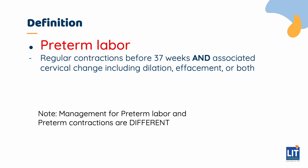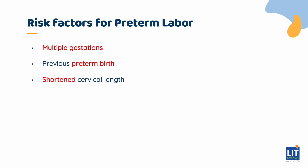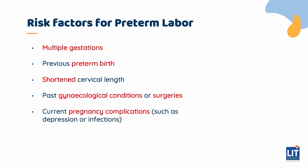There are several risk factors for preterm labour. These include multiple gestations such as twins, history of previous preterm birth, a short cervical length during pregnancy, past gynaecological conditions or surgeries such as unicornuate uterus, and current pregnancy complications such as depression or infections.